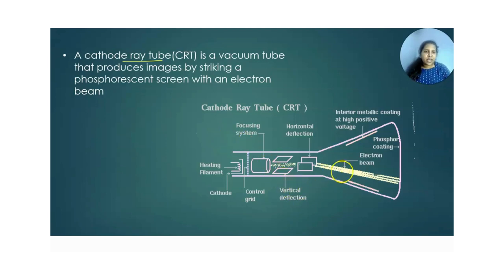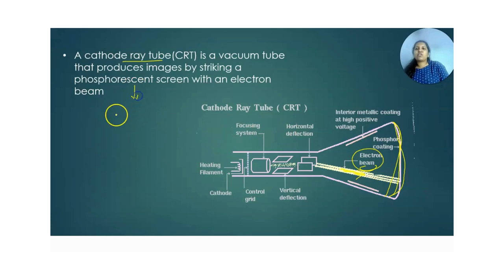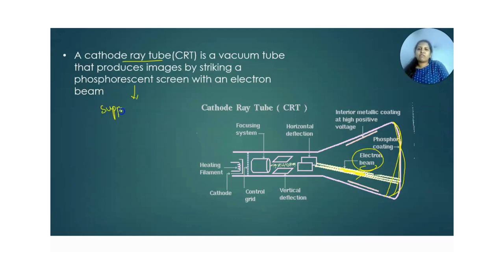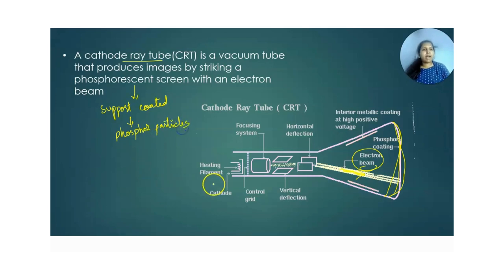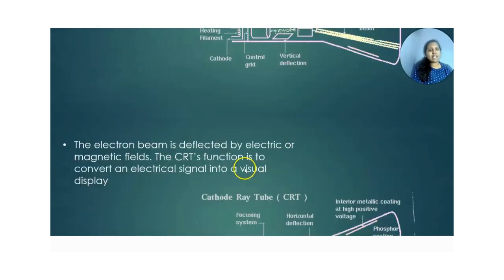The image is produced by an electron beam striking on a fluorescent screen. This fluorescent, or phosphorescent, screen is a support coated with phosphor particles. We will be learning exactly what these phosphor particles are.